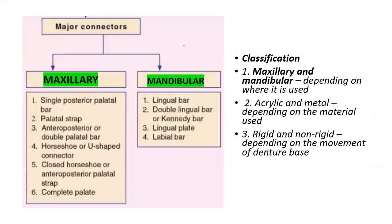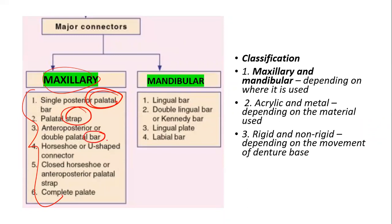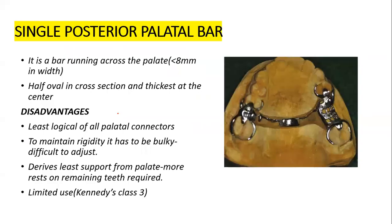Now let's start talking about the individual maxillary major connectors. There are basically six maxillary major connectors: the single posterior palatal bar, the palatal strap, the anteroposterior palatal bar, the anteroposterior palatal strap, the horseshoe major connector, and the complete palate.